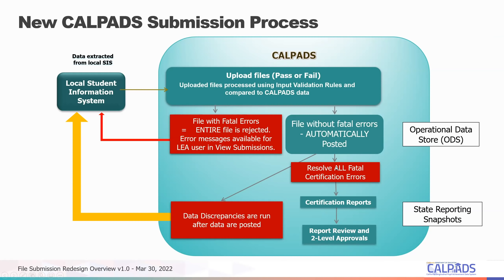Once data is posted, when we are in a submission the certification process is the same — we will have a window, run snapshots, and certification validations run at that time. You will be expected to clear all fatals. Some data discrepancies, if not resolved, will continue on and become a certification validation error. This is the feature giving you visibility of ODS errors before a submission window opens, so you can get a jump start on fixing fatal errors. Certification reports and approval remain unchanged.